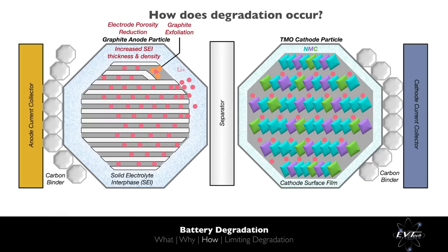Over time, further reactions between the anode surface and SEI with the electrolyte result in the SEI becoming thicker and denser, which in turn makes it more challenging for lithium ions to enter and exit the anode. The increased thickness of the SEI also results in a reduction of porosity of the overall electrode. At high state of charge and high charge rates, it is possible for the lithium ions to not fully desolvate from the solvents in the electrolyte prior to entering the anode, resulting in damage to the layered graphite structure. This can lead to parts of the anode becoming more difficult or impossible to access, thus reducing active anode material and making ion transport more difficult.